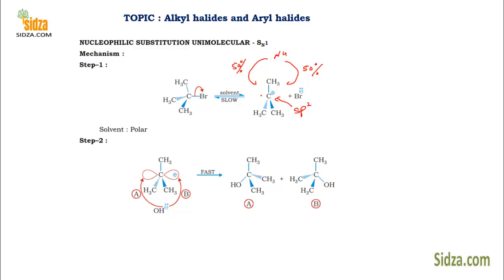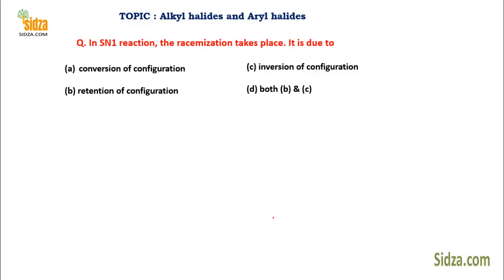If the nucleophile attacks from the back side, the three groups flip to the other side — that is inversion of configuration. So when there is an SN1 mechanism, both possibilities exist with 50% chances each. That's why you get 50% inversion and 50% retention — a racemic mixture. The answer is option D, because both retention and inversion of configuration occur.